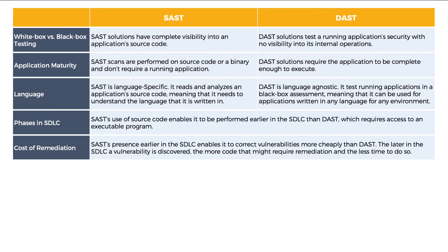In terms of positioning in phases in SDLC, SAST's use of source code enables it to be performed earlier in the SDLC than DAST, which requires access to an executable program. In terms of cost of remediation, SAST's presence earlier in the SDLC enables it to correct vulnerabilities more cheaply than DAST. The later in the SDLC a vulnerability is discovered, the more code that might require remediation and the less time to do so.